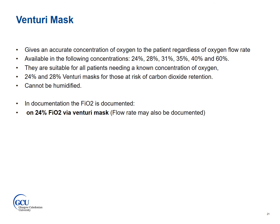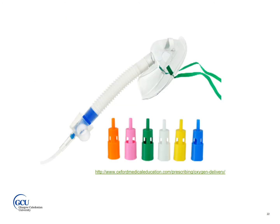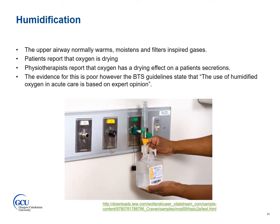The upper airway normally warms, moistens and filters inspired gases. When these functions are impaired by a pathological process or bypassed by an artificial airway, it is common practice to provide humidification. The main reason for using humidification, especially with high-flow oxygen, is that it may reduce the sensation of dryness in the upper airways that oxygen can cause. The evidence for this, however, is poor. The British Thoracic Society guidelines say that the use of humidified oxygen in acute care is based on expert opinion. As physiotherapists, we may recommend humidification for patient comfort and also to help with thick, sticky secretions.